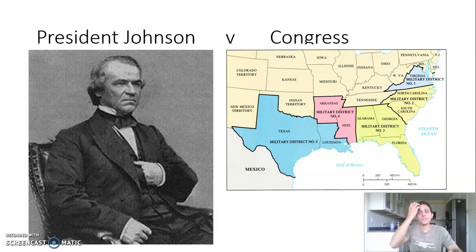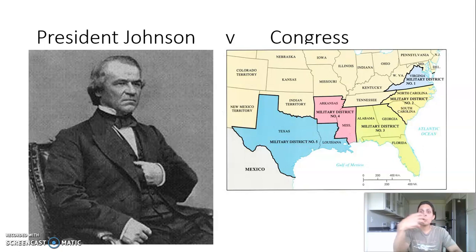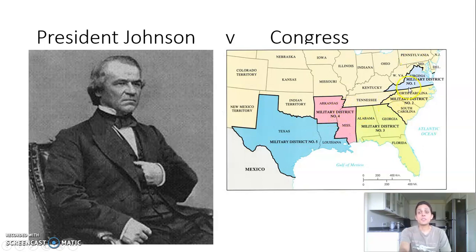Johnson actually advocates the back-to-Africa idea of sending African Americans back to Africa, so he's really not interested in protecting their rights. The Radical Republicans, however, are very interested in protecting African American rights. During Radical Reconstruction, Congress carves the South into military districts and sends Union troops back down to occupy these areas and make sure laws are followed and African American rights are protected. They pass the 14th and 15th Amendments, enforce the 13th Amendment, and require Southern states to ratify these amendments and have 50% of the population pledge loyalty — much stricter requirements than Johnson's plan.